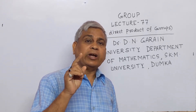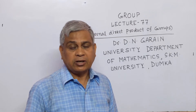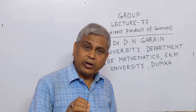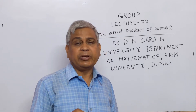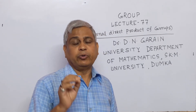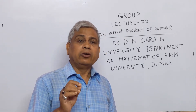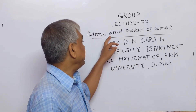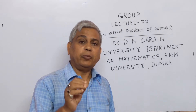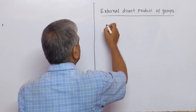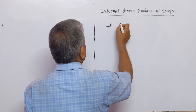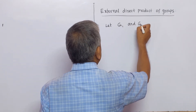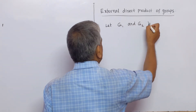In group theory, we have two types of direct product. The first type is external direct product and the second type is internal direct product. Today we will discuss about the external direct product of groups.